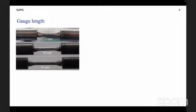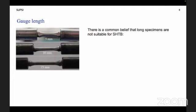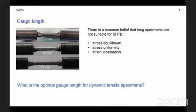The specimens were obtained by machining a 12 mm rebar. The common belief that long specimens in general are not adequate for split Hopkinson tensile bar is now discussed. This issue is related to the stress equilibrium, the stress uniformity and strain localization. The question is: what is the optimal gauge length for dynamic tensile specimens, or is it true that longer specimens are not adequate and why?